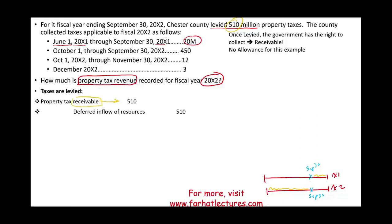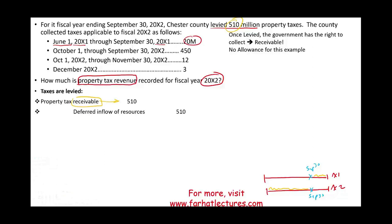We do have a receivable when it comes to property tax revenue because even if the owner of the property sells it, the new owner will have to pay the taxes. For this example we won't assume any allowance. When the government says you legally have to pay the $510 million, they have the right to collect it — it's a receivable.